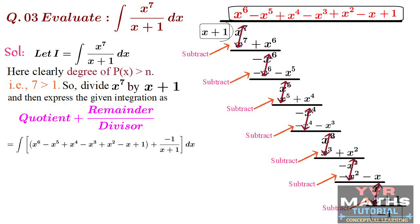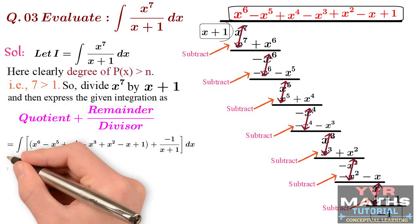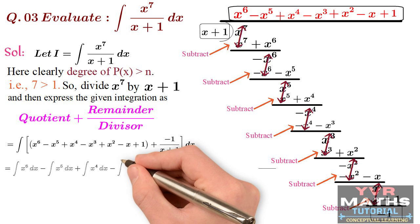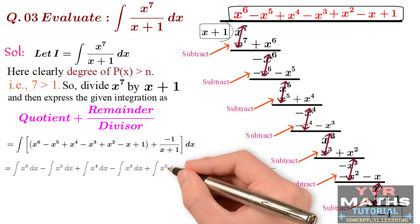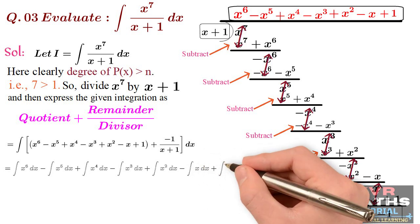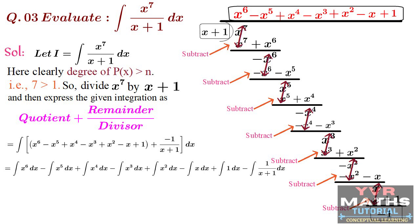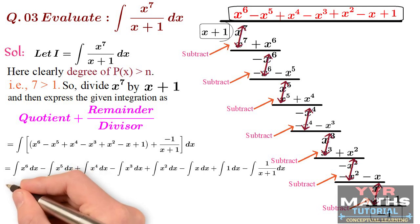Now, by using basic properties of indefinite integrals, I am going to apply individual integrals for each term. We get: ∫x⁶ dx − ∫x⁵ dx + ∫x⁴ dx − ∫x³ dx + ∫x² dx − ∫x dx + ∫1 dx − ∫1/(x+1) dx. In total there are 8 integrals. The first 7 integrals are in the form ∫xⁿ dx, and the last integral is in the form ∫1/x dx. Applying all these standard formulas gives us the final result.